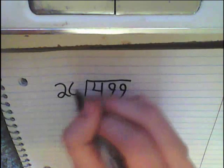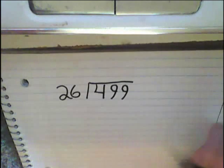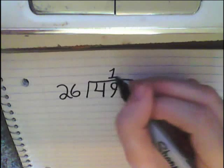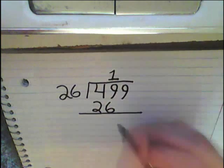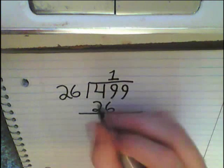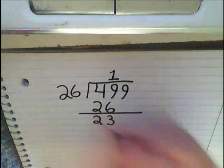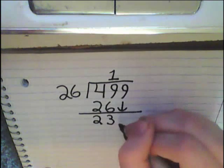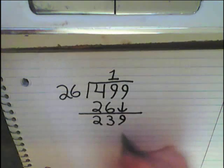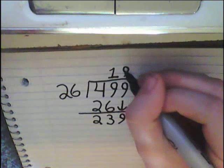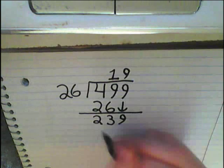We want to divide 499 by 26. 26 can't go into 49 two times, it can only go in one time, so you put a 1 up here and you multiply 26 by 1, which gets you 26. 9 minus 6 is 3, 4 minus 2 is 2. 26 can't go into 23, so you bring down the 9. 26 goes into 239 nine times — 26 times 9 is 234.